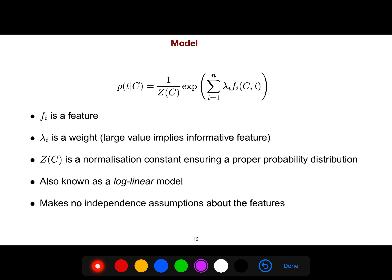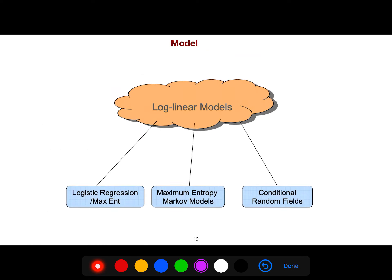And so this is the model. F_i is feature. Lambda_i is the weight. And large value implies informative feature. So that is the weight of that, that feature is important for that. And this is our problem in all machine learning: normalization constant ensuring a proper probability distribution. So this one is also called log-linear model and makes no independence assumptions about the features. So when you want to use log-linear models, you could use it for conditional random field, if you watch my playlist for CRF, or this playlist, which is about maximum entropy Markov model. And we don't discuss logistic regression. It's very simple.